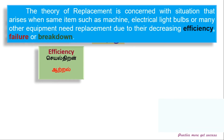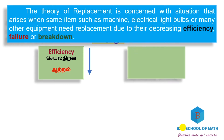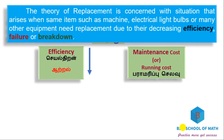When efficiency gradually decreases over time, we can use the item for some time, but eventually maintenance costs increase. Sometimes items fail suddenly — a breakdown occurs — and in that situation we need to do a replacement.